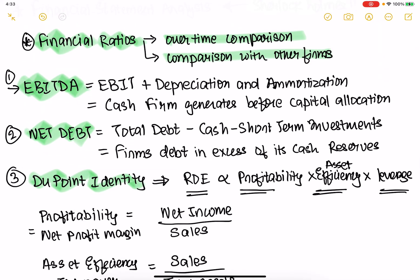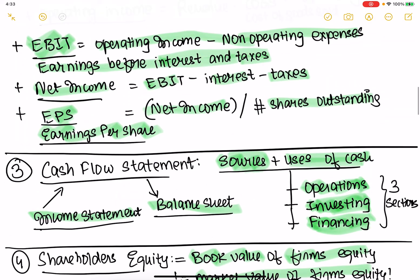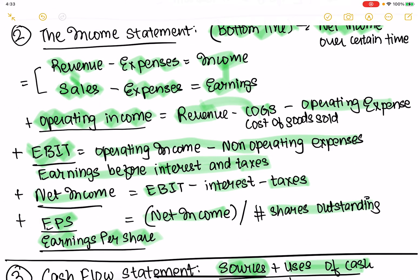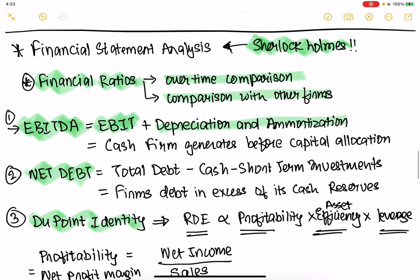EBITDA is EBIT plus depreciation and amortization. We saw what EBIT is — earnings before interest and taxes, which is operating income minus non-operating expenses from the income statement. Once you get EBIT, you can add back depreciation and amortization because these are not real cash outflows.